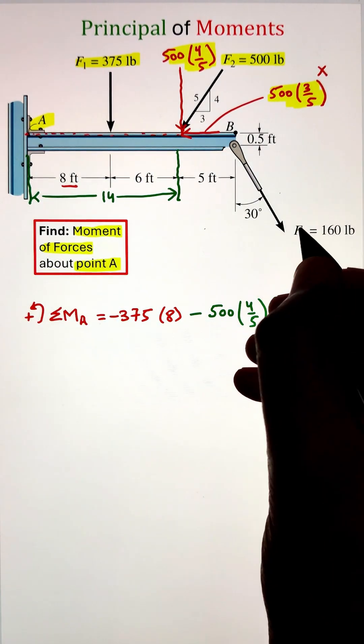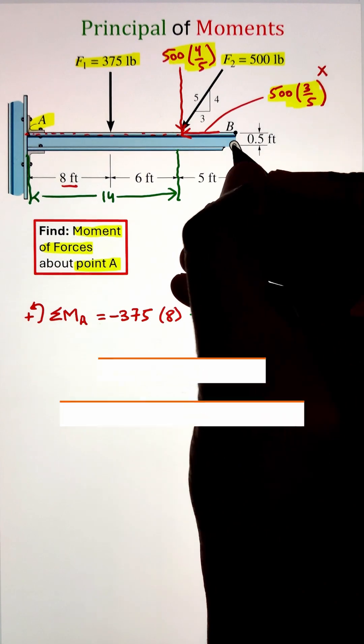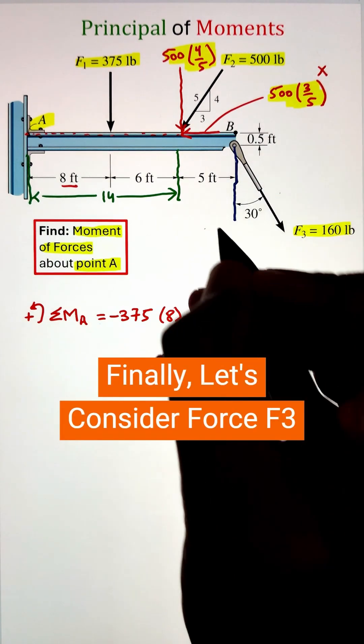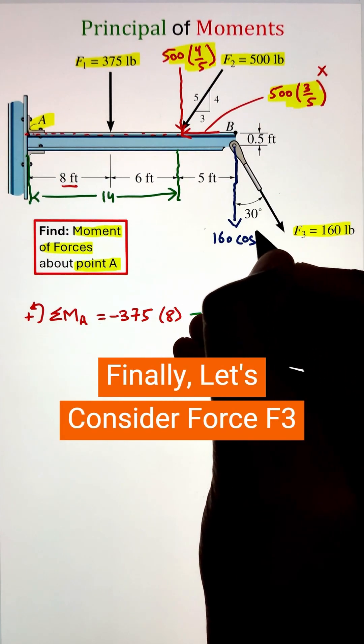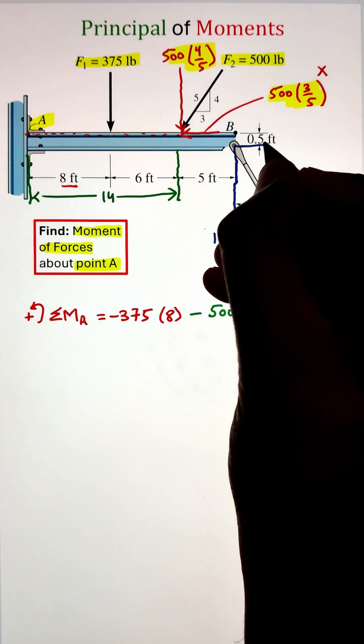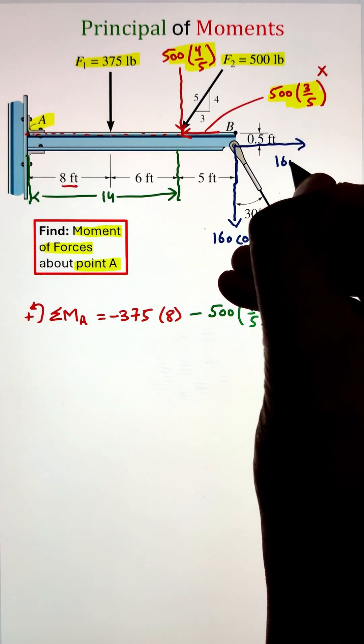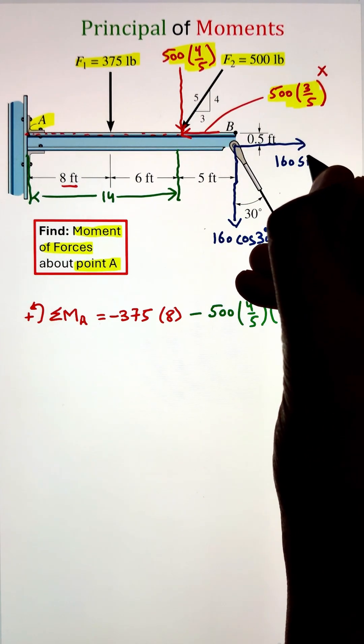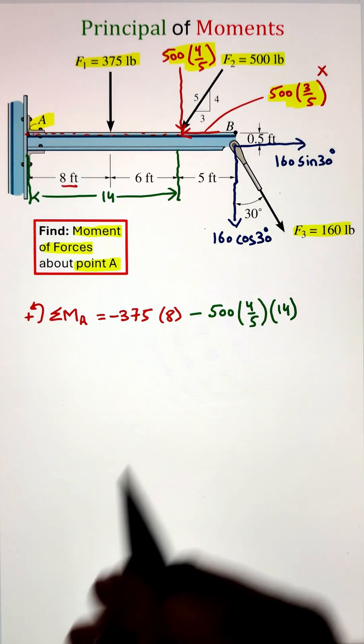Finally, let's resolve force F3. We are given an angle of 30 degrees from the vertical, so we can project it along the vertical direction by taking the cos 30 function. Whereas to get the horizontal component, we multiply the force with sine 30.